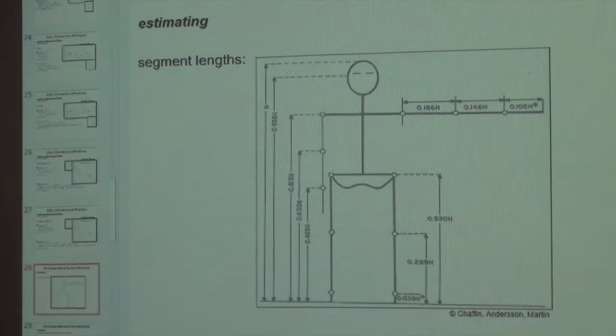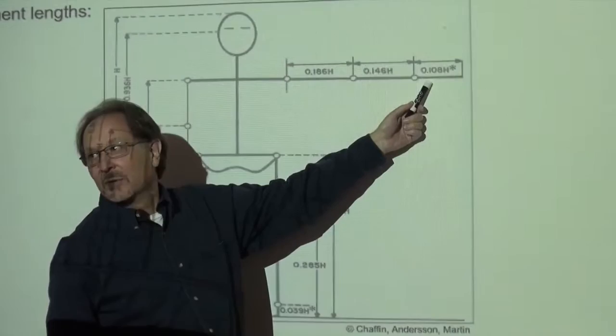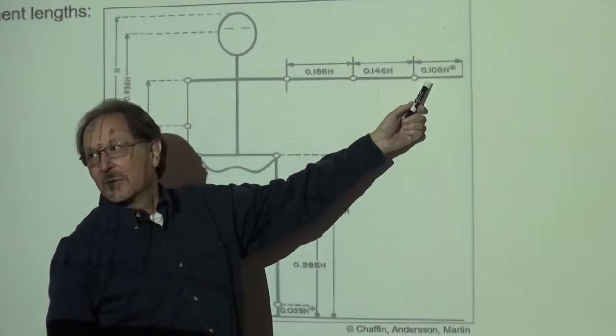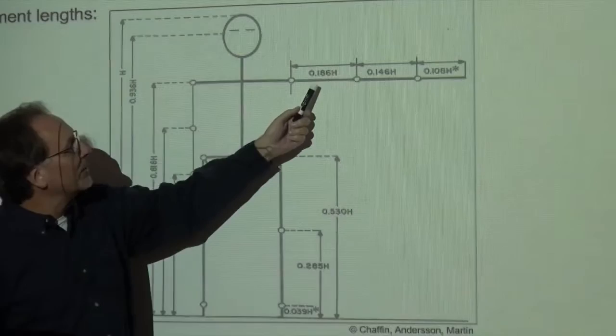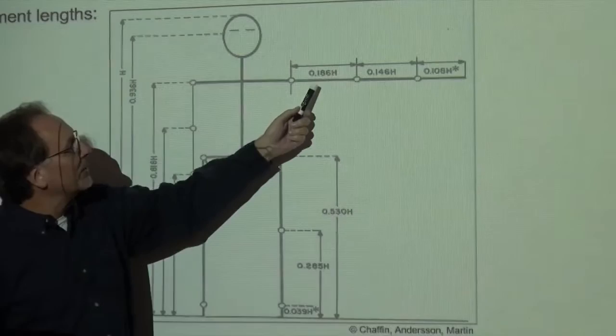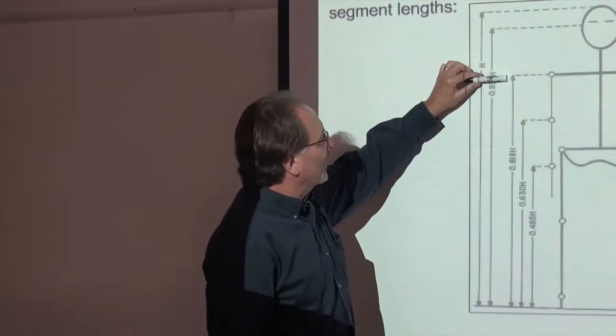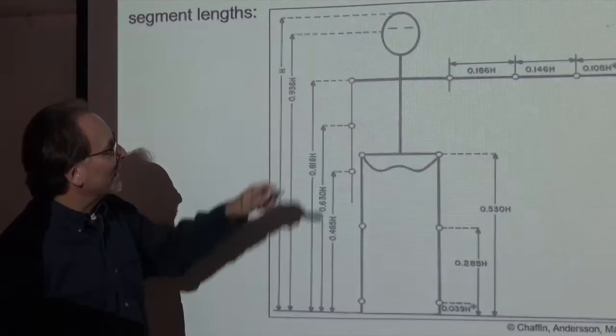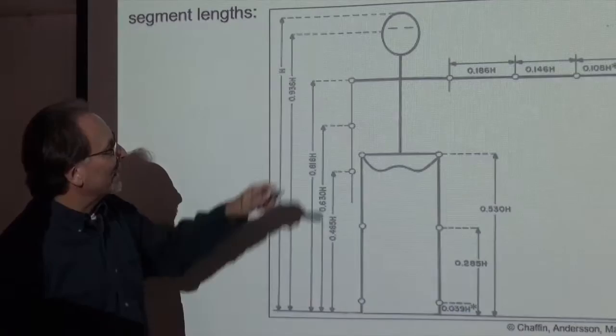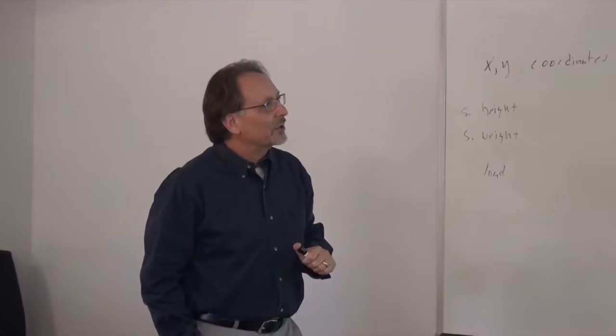This table shows that your hand is 0.108 times your height. Your forearm from the elbow to the wrist is 0.146 times height. Your upper arm from the shoulder to the elbow is 0.186 times height. And if we want to get the head and trunk, by subtraction, we subtract 0.530 to the hip from 0.818 to the shoulder. That gives us the head and trunk — from the shoulders down to the hip. These are all proportions of subject height.